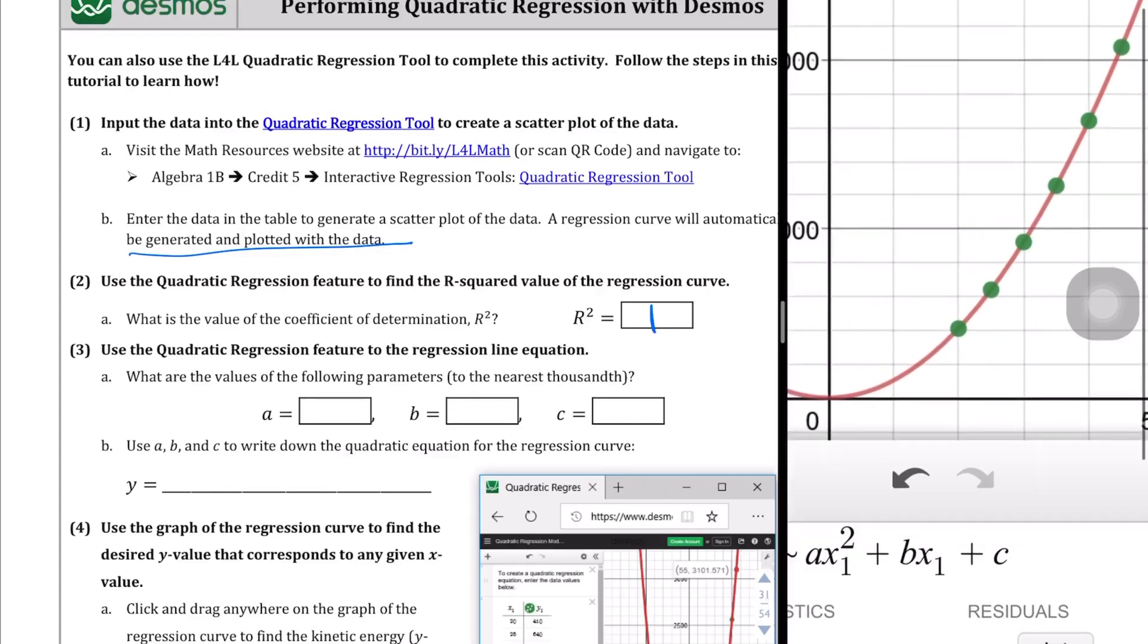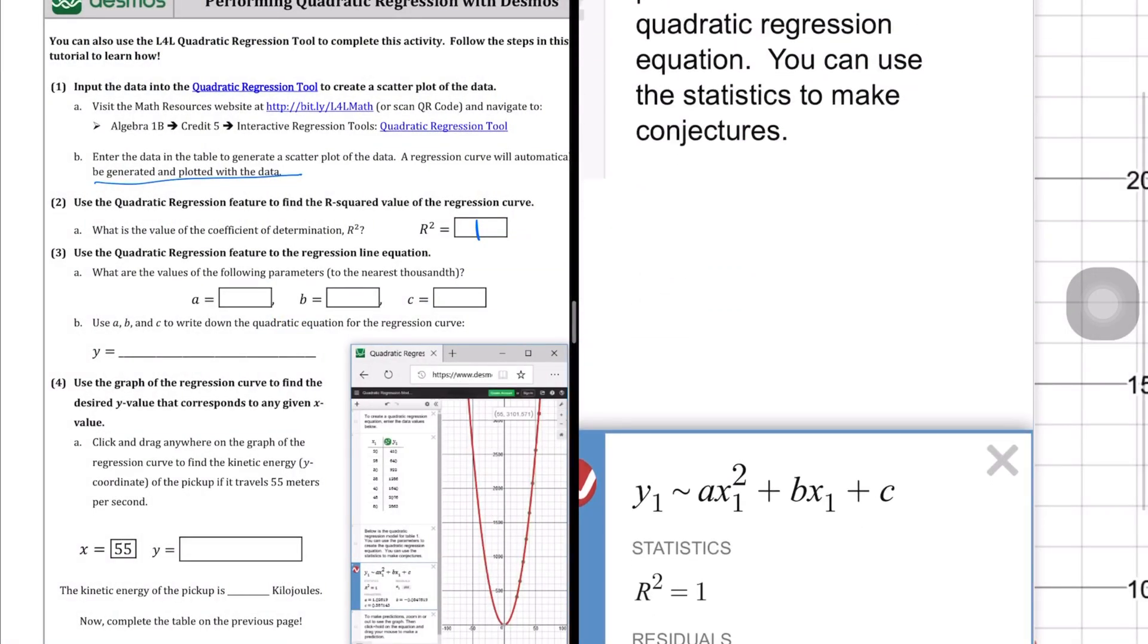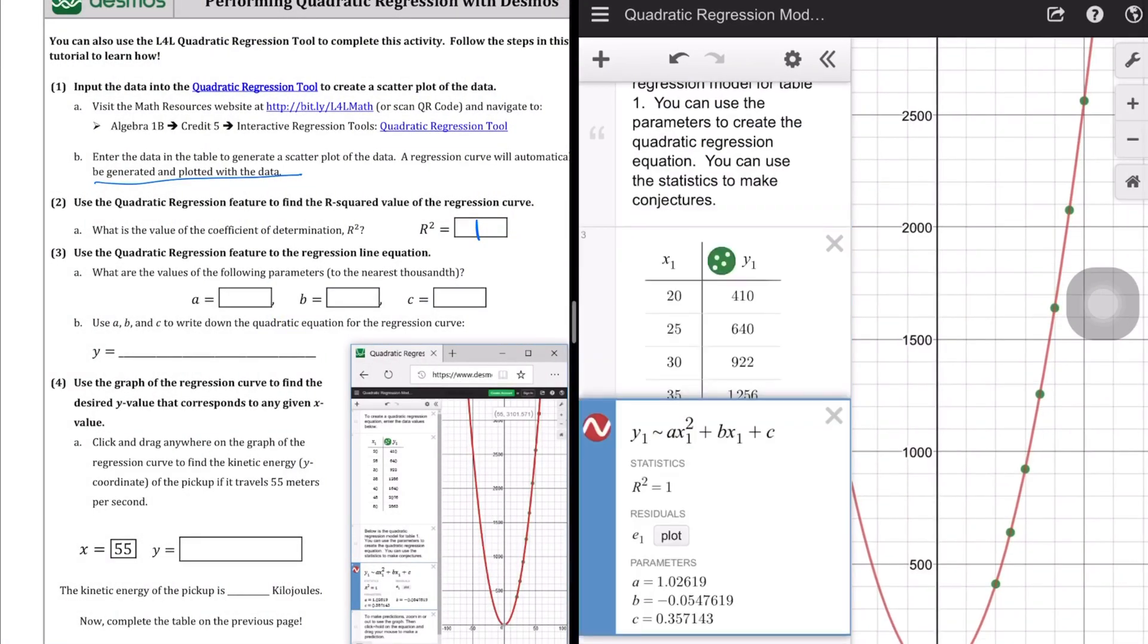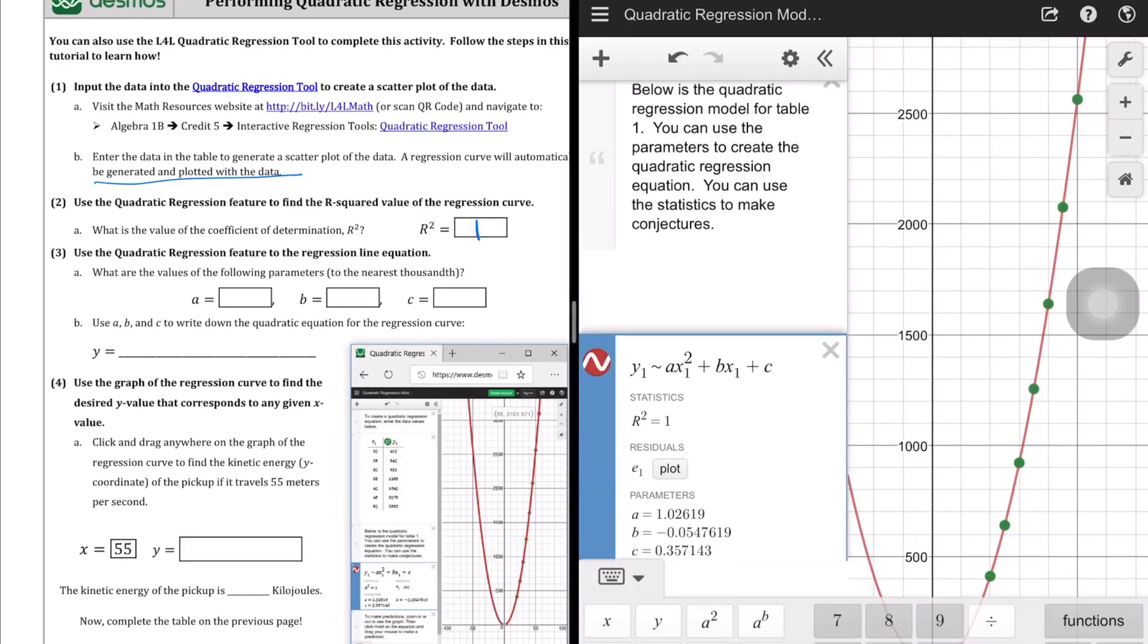And they want the a, b, and the c values. So let's do that. a values, b values, c values. So let's see. It's a little hard to kind of manipulate this here.